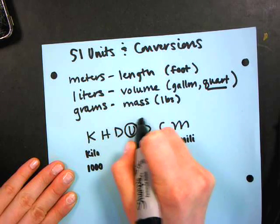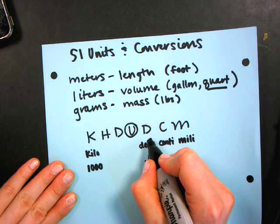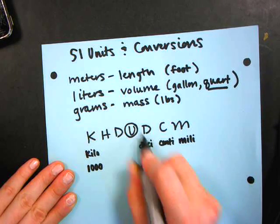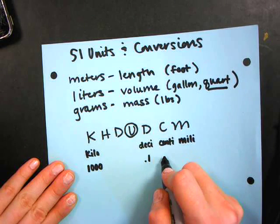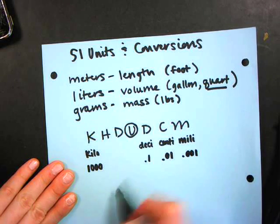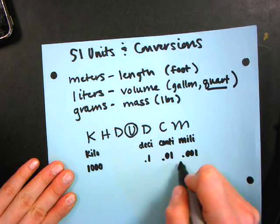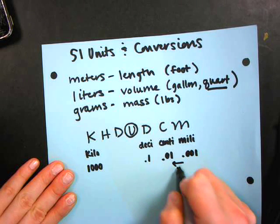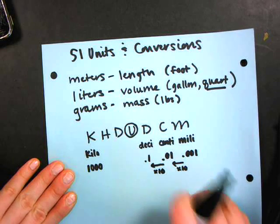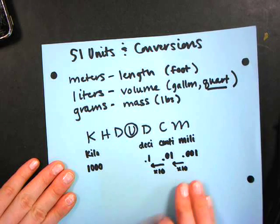And then desi, we start getting less. So I'm going to say desi is 0.1, because I'm 10 less than my base. So if you think about it, 10 times 0.1 is going to get back to my base. Centi is 0.01, and milli is 0.001. So you can see that we're just moving over by tens. To get from this step, we're multiplying by 10. To get to this step, we're multiplying by 10. So that's the really nice thing about SI units, is that everything's in a unit of 10, which means that it's super easy to convert between them, if you know how.